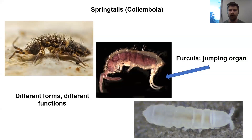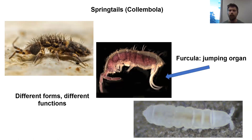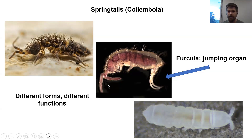Moving on to another very important group — the springtails, or Collembola. These were the second most abundant arthropods we recover from our soil arthropod community sampling. They have many different forms, which corresponds to their different functions and where we find them in the soil profile. They're called springtails because they have a unique appendage called the furcula — the jumping organ. I'll look at a video showing this in action in just a second, but first I want to cover the different forms and functions.